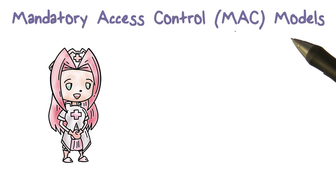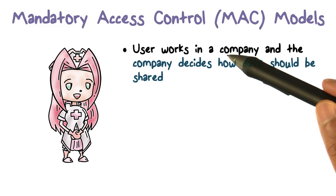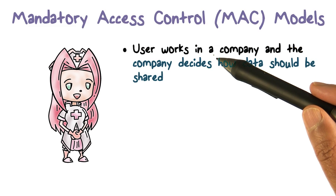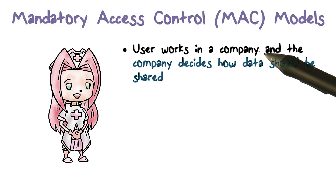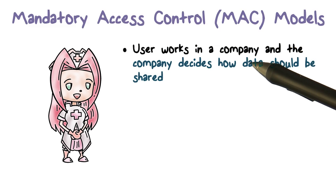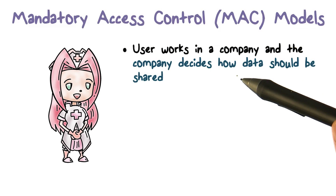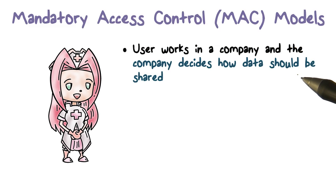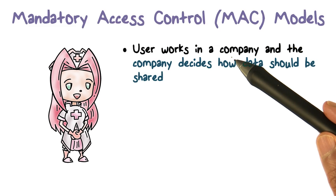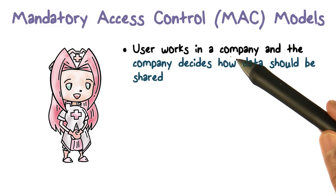What exactly is mandatory access control? Why do we need it? It's people who actually create information and run applications that manipulate such information. But people work for a company or a government agency. And it's really their employer, or somebody trusted by them or acting on behalf of them, who should really be able to specify how certain kinds of data can be shared — taking the power of deciding how data should be shared away from the user.